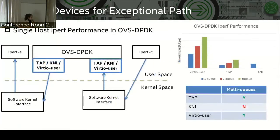This slide introduces the performance comparison between KNA and virtual user. We use iperf to check performance between two software kernel interfaces generated by virtual devices on the same host. Virtual user with vhost net and the TAP device can support multi-queue and RSS. Their performance can partially scale with queues and cores. Since KNA does not support multi-queue, only one queue performance is shown in this diagram. Overall, we think virtual user has better performance.